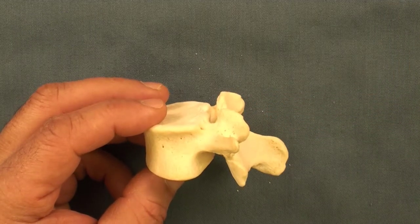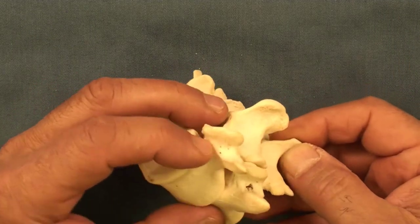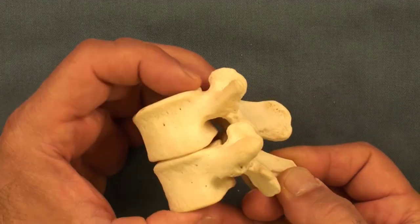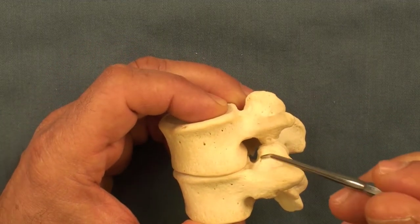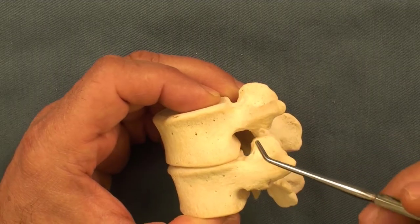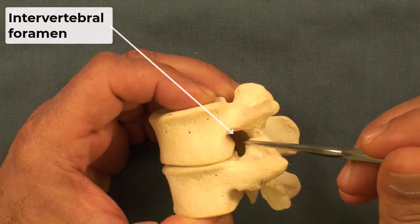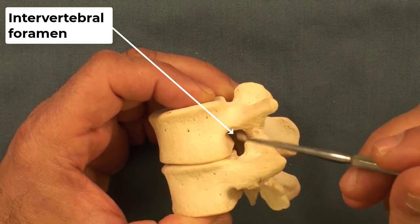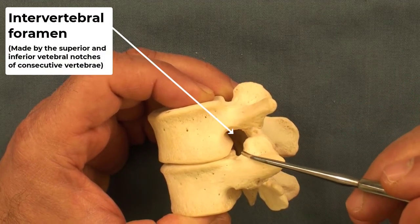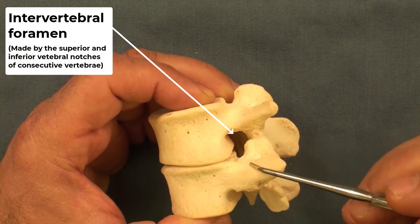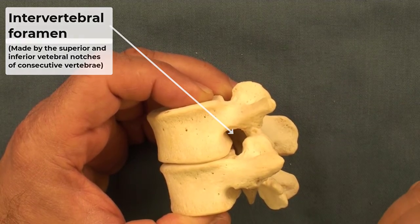Now I'm going to put the two vertebrae on top of each other. That opening between two adjacent vertebrae is referred to as the intervertebral foramen. The vertebral notches form the intervertebral foramen, and the articular facets form the joints between two adjacent vertebrae.